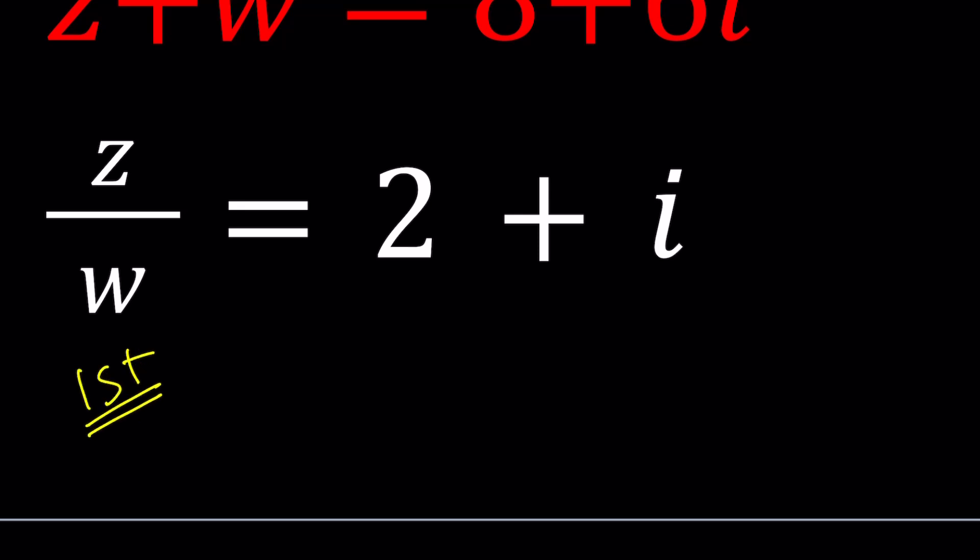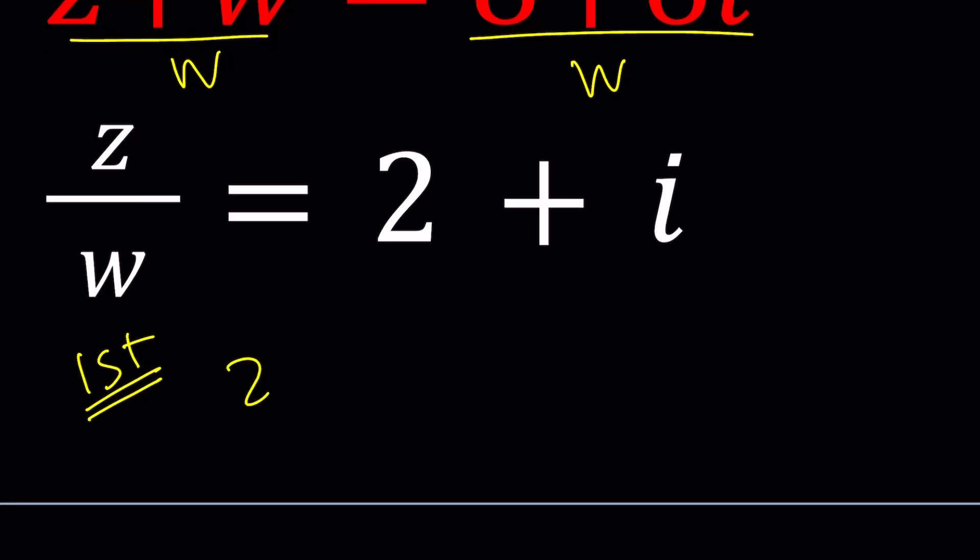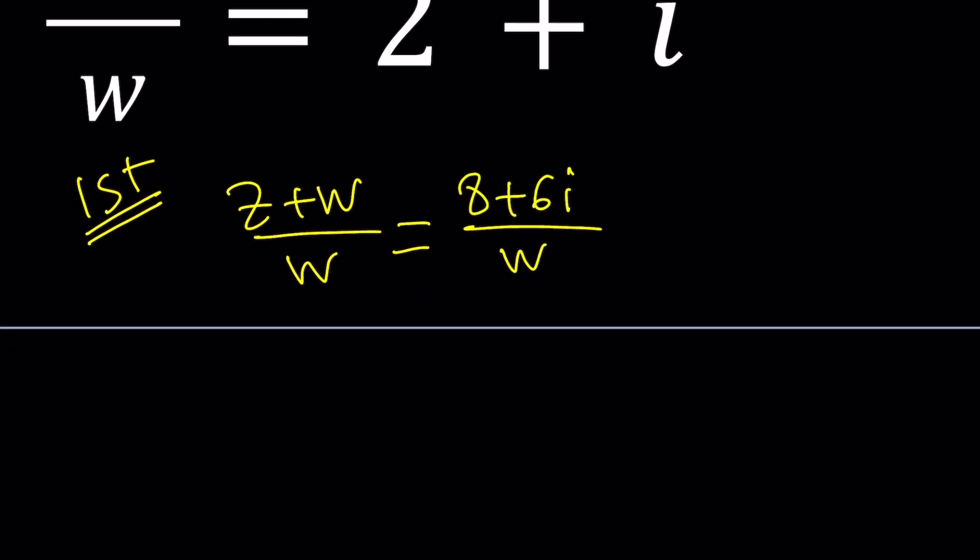And here's the first method. Now, I'm thinking about this like I'm given z over w. So why not try to get that from the first equation? Guess what? If you divide both sides by w, you're going to get that. But you're going to get something else, but that's easy to handle. So we're going to get z plus w over w equals 8 plus 6i over w. Awesome. Right hand side doesn't look that awesome, but left hand side will look awesome in a little bit.